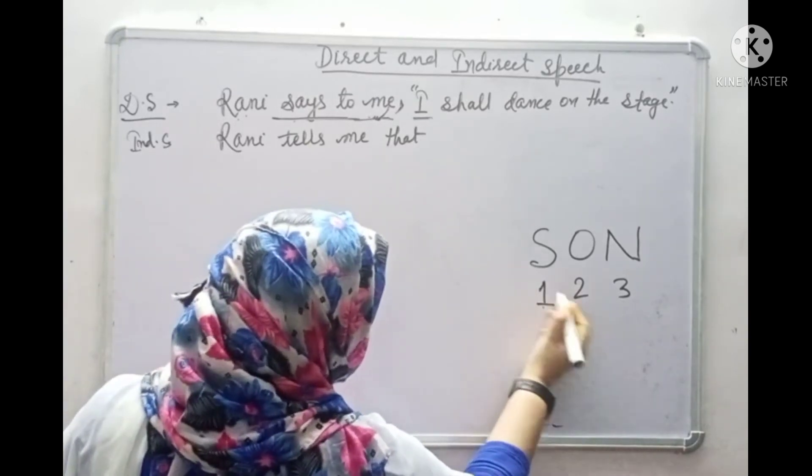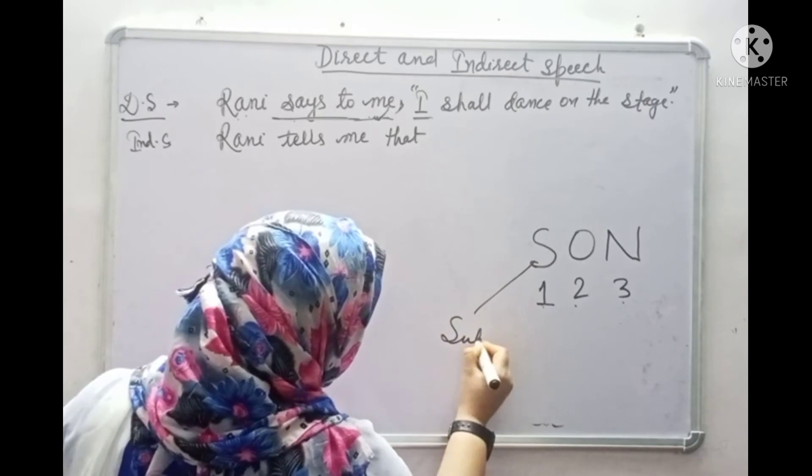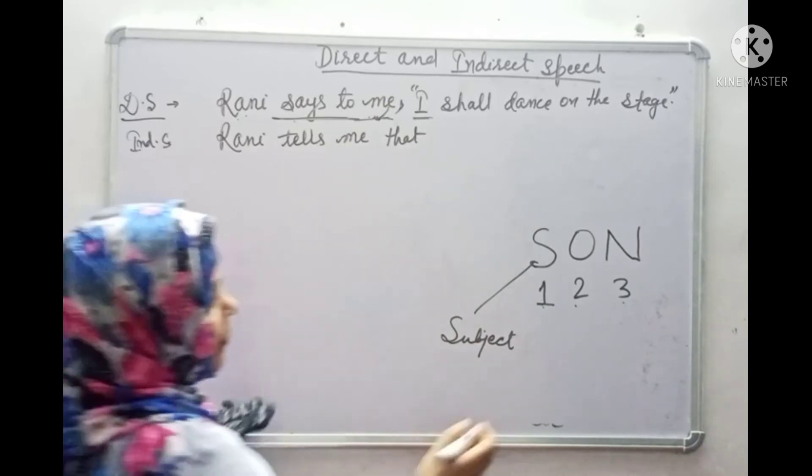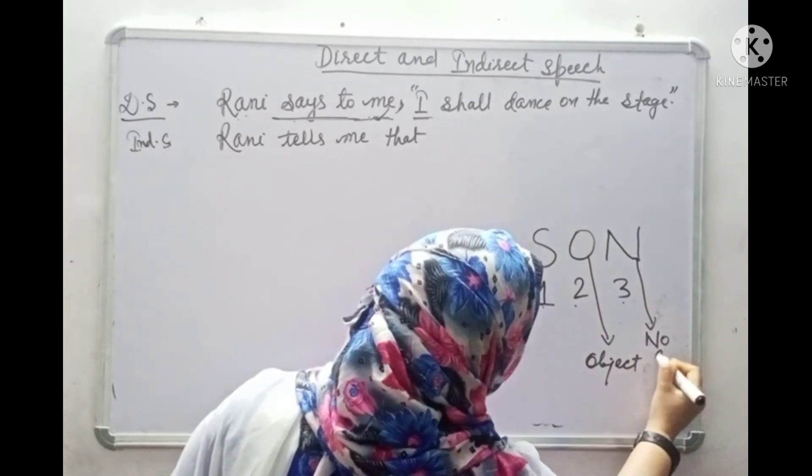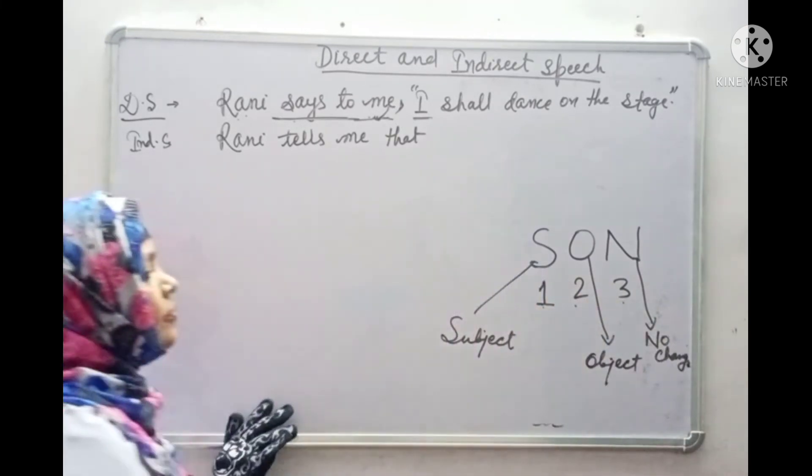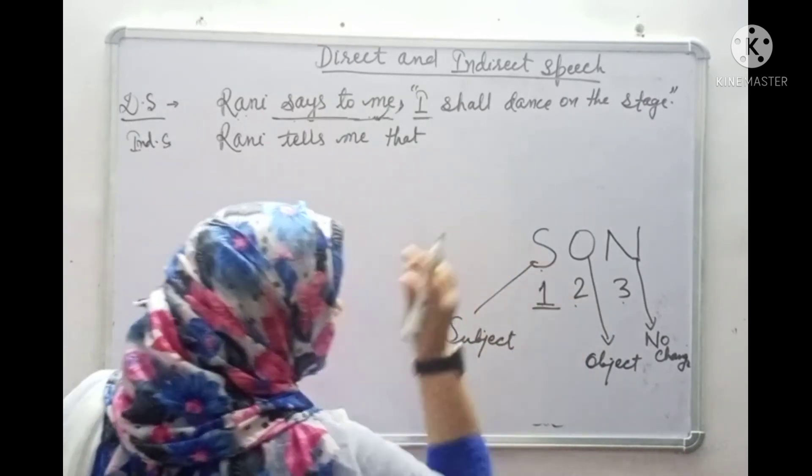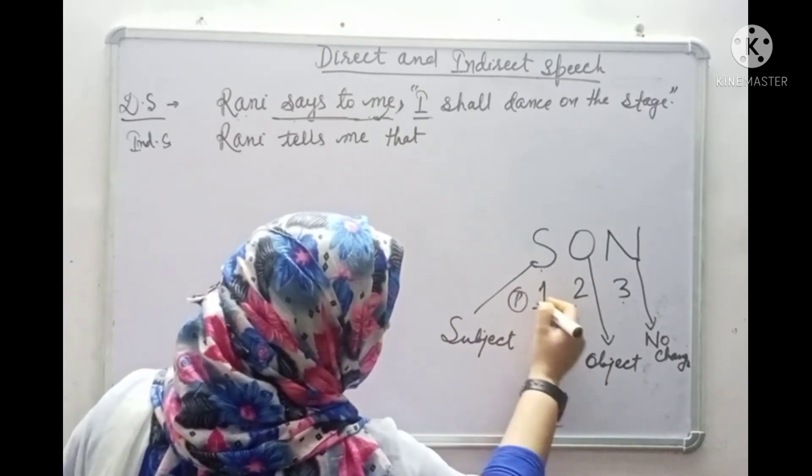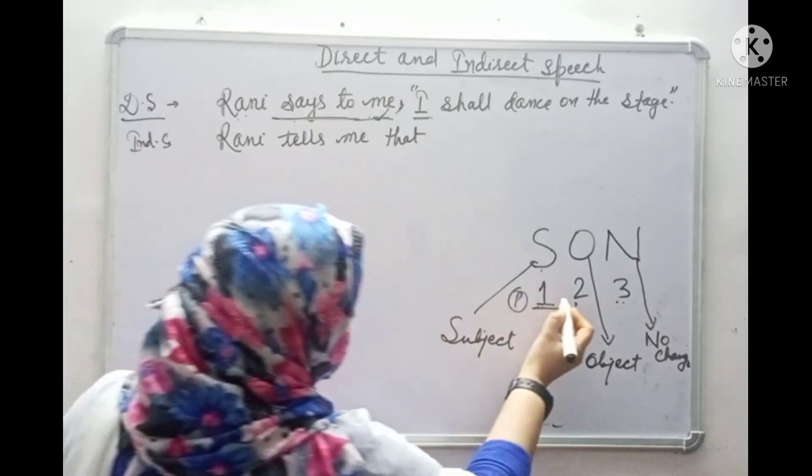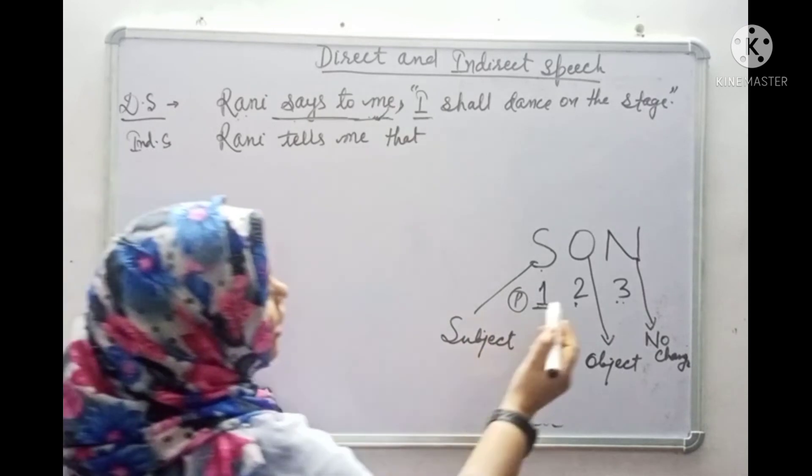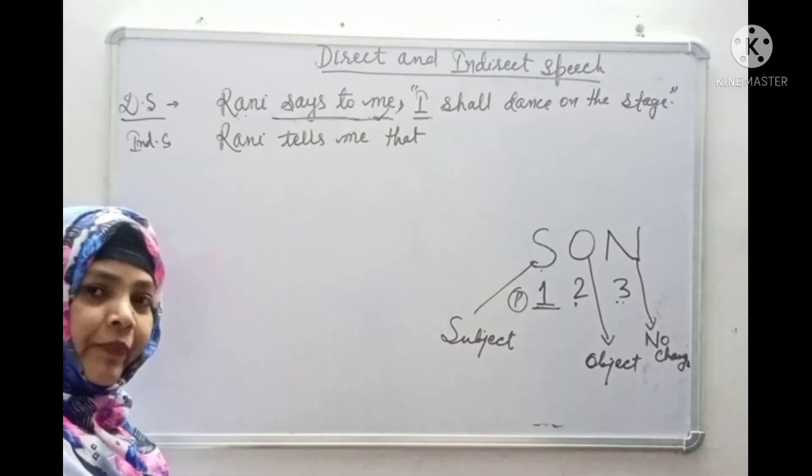So first person, second person, third person. If first person changes, it changes according to subject. This is subject. S stands for subject. O stands for object. N stands for no change. So here, first person changes according to subject. If our pronoun is second person, then changes will come according to object. If our pronoun is third person, then there will be no change of pronouns. Is it clear? Any problem? Now let's proceed.